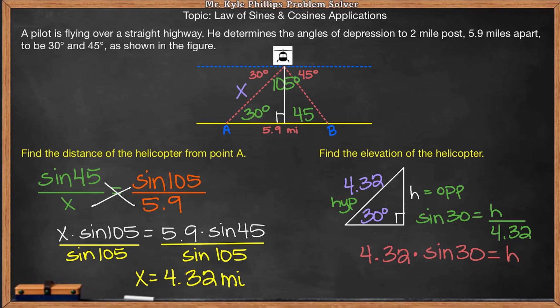We have 4.32 times sine of 30. That's going to give us the height. And this we can do on our calculator. So 4.32 times sine of 30, and that's going to give us 2.16. So the height of our helicopter is 2.16 miles.